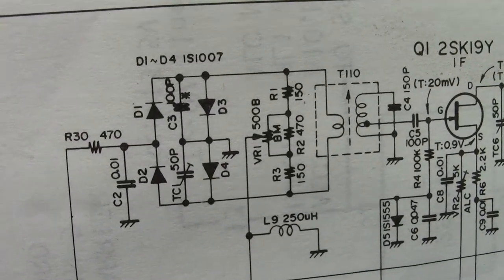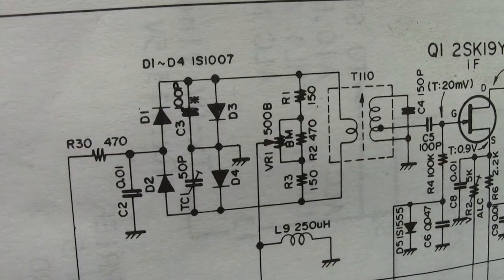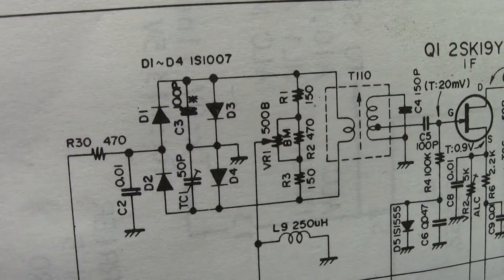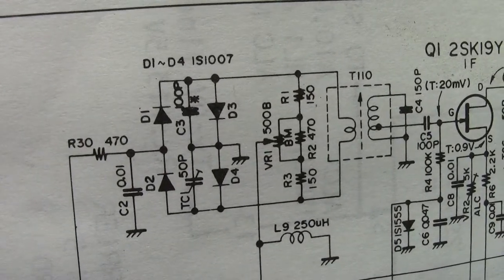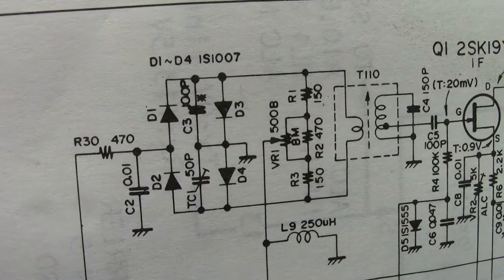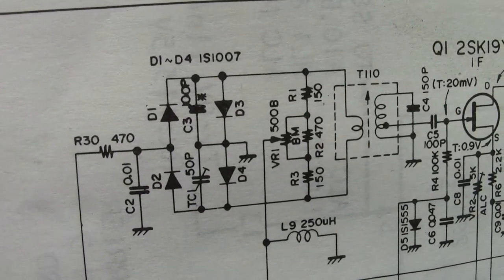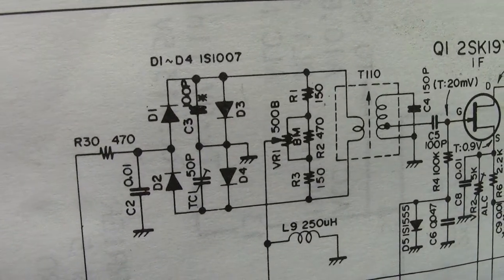Now the only thing you've got to be careful is when you replace these diodes you want to make sure that you orient them the way they came out. In other words the anode which is the arrow and the cathode which is the band.